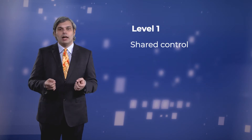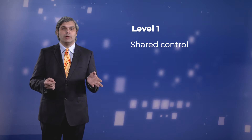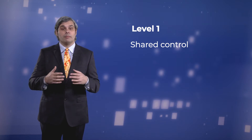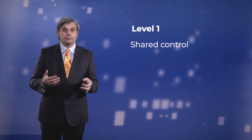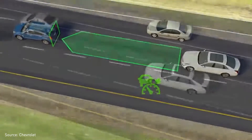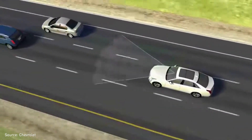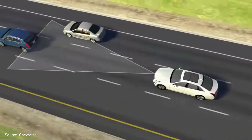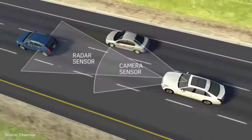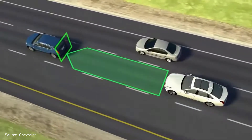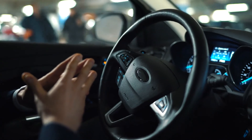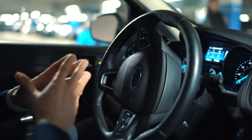In level 1 cars, the human shares control of the vehicle. The human is still required to maintain eyes on the road and hands on the steering wheel, but some control is automated. An example is a feature like automatic cruise control, which keeps the velocity constant, or the distance to the next vehicle constant, while the human controls the steering. These systems help reduce driver fatigue in traffic or on long stretches of highway. Another example is a parking assistance system, in which the car steers, but the human controls the speed of the vehicle.